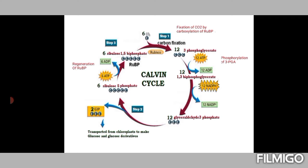This carboxylation is catalyzed by the enzyme RuBisCO — ribulose bisphosphate oxygenase/carboxylase. It is a unique enzyme: it is very slow, so plants accumulate it in leaves, making it the most abundant enzyme or protein in the living world. It is also unique because it catalyzes both carboxylation and oxygenation — two contrasting types of reactions.